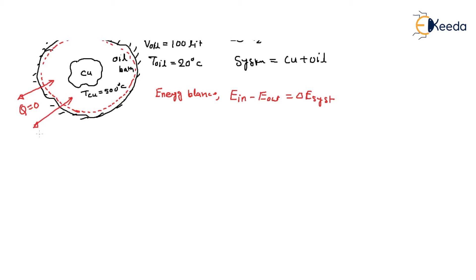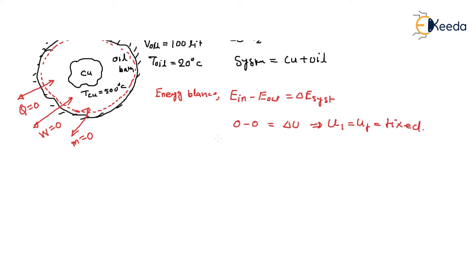There is a rigid boundary so no work transfer. Also, this is a closed system so there is no mass transfer. Energy in minus energy out equals zero, so delta E of the system equals zero. Neglecting kinetic and potential energy changes, delta U equals zero, meaning U initial equals U final. So dU equals mass times c times dT.